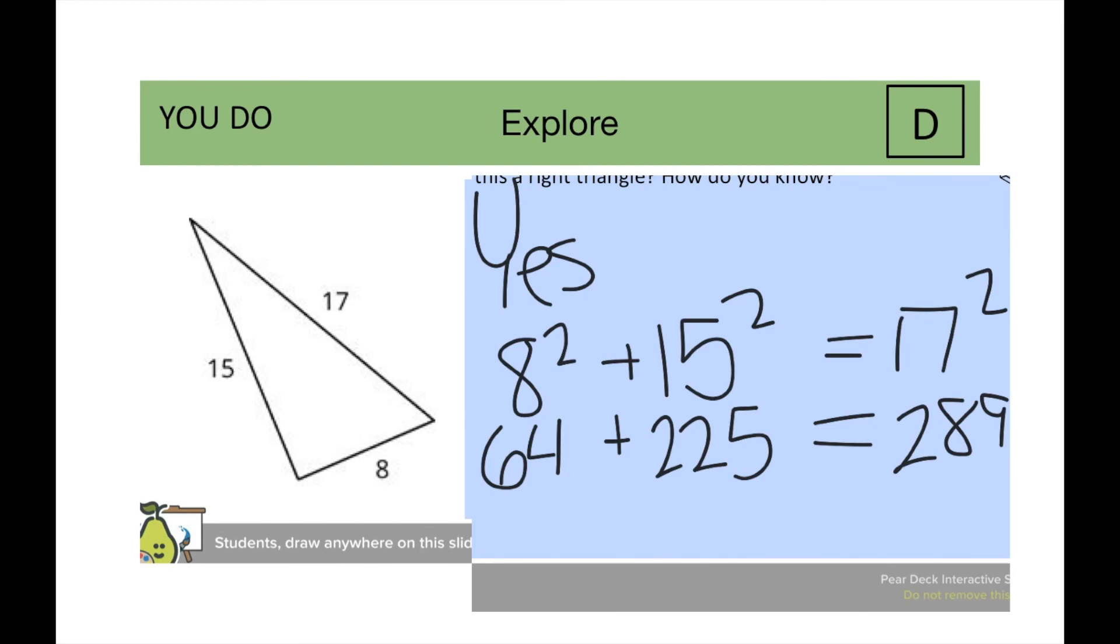And when they add sixty-four and two hundred twenty-five together, they get two hundred eighty-nine equals two hundred eighty-nine. So the statement is true, and it is a right triangle.